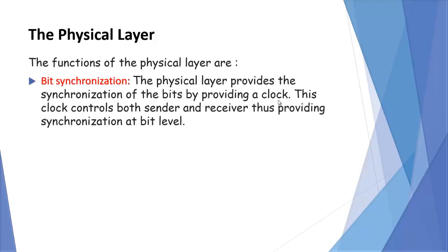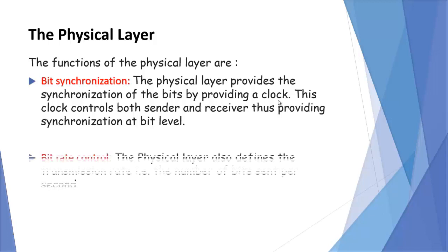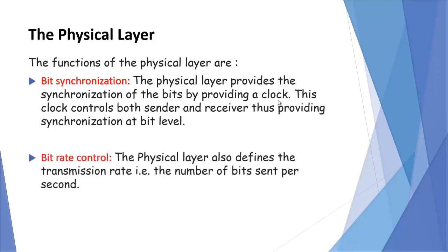Physical layer provides synchronization of bits by providing a clock, and this clock controls both sender and receiver, providing synchronization at bit level. Bit rate control means it defines the transmission rate — the number of bits sent per second.